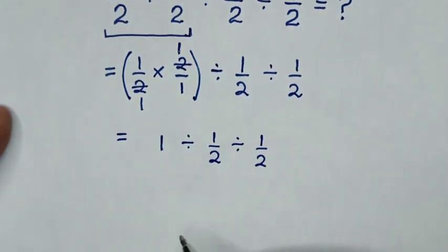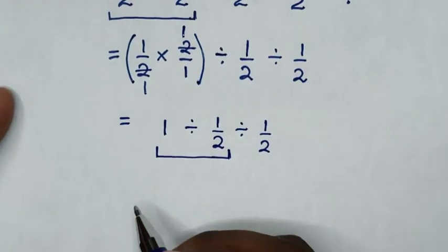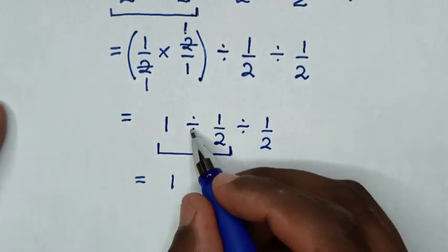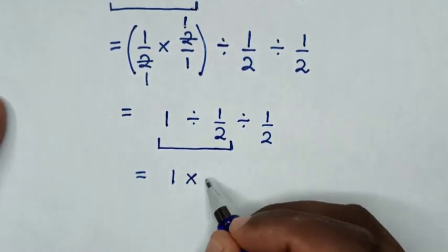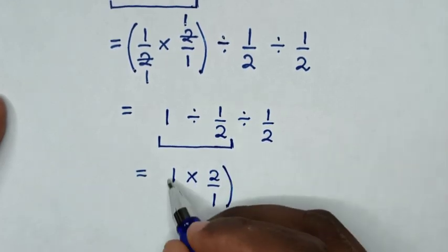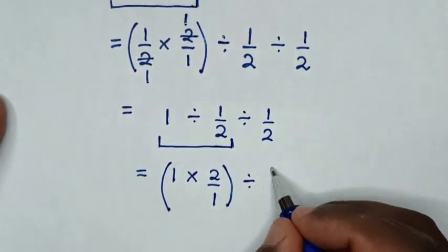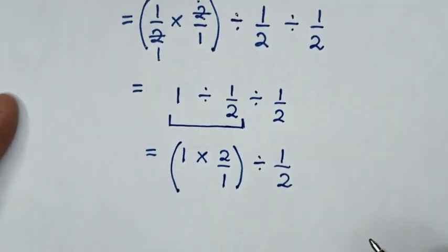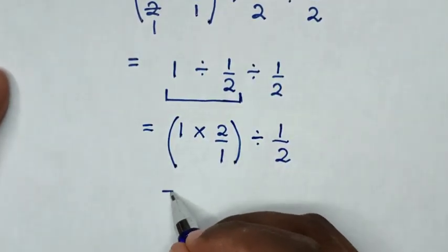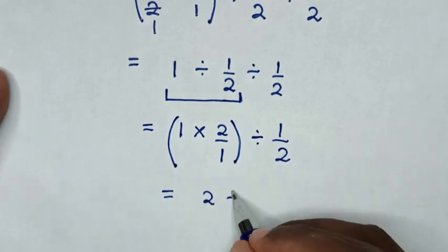In the next step, we start to deal with this first operation. So it will be equal to 1, then divide by 1 over 2 is the same as times 2 over 1, then bracket, divide by 1 over 2. Then 1 times 2 is 2, so it will be equal to 2, then divide by 1 over 2.